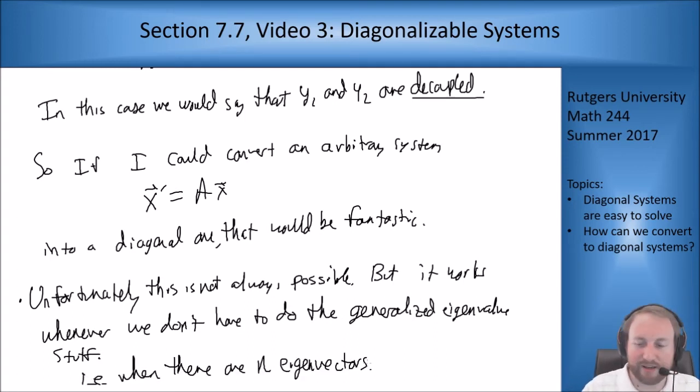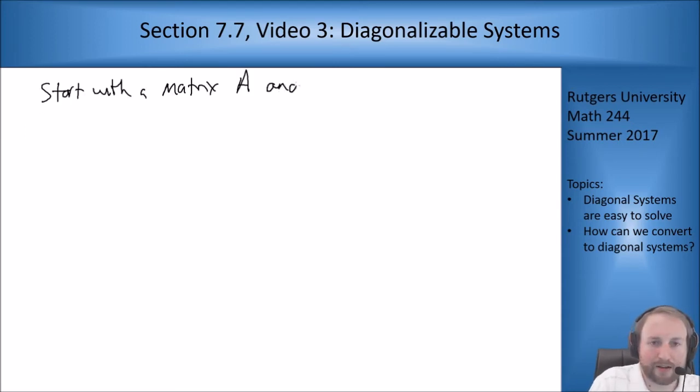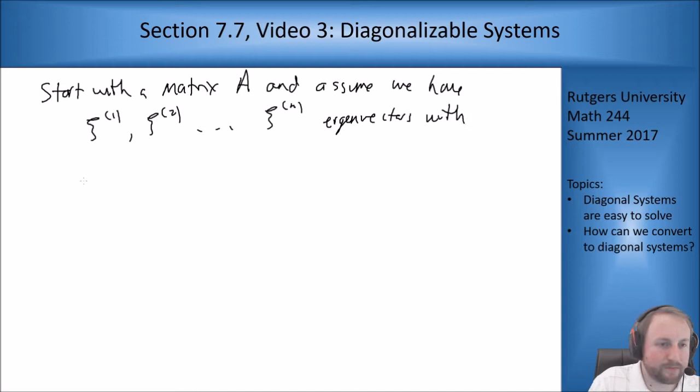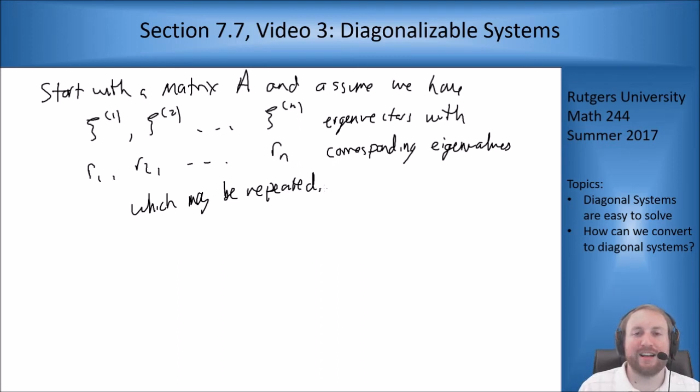How do we do this? Let's start with the matrix A, and assume we have C1, C2 up through Cn eigenvectors with R1, R2, Rn corresponding eigenvalues, which may be repeated. Saying I have a full set of n eigenvectors doesn't mean my eigenvalues aren't repeated, it just means for each one that is repeated I have a full set of eigenvectors.